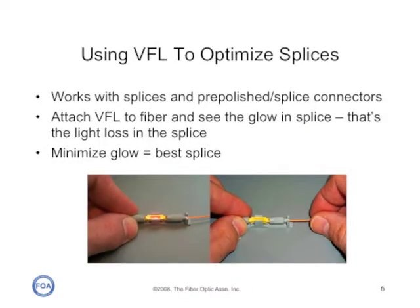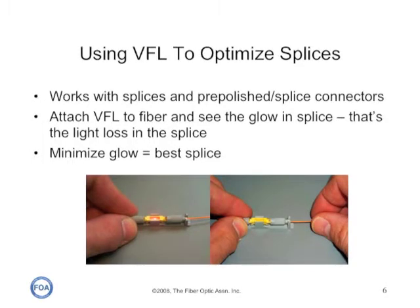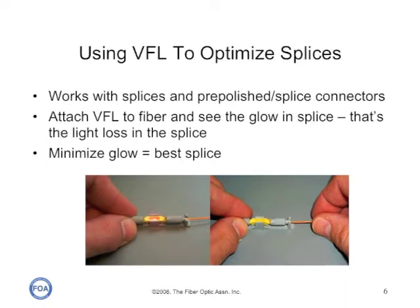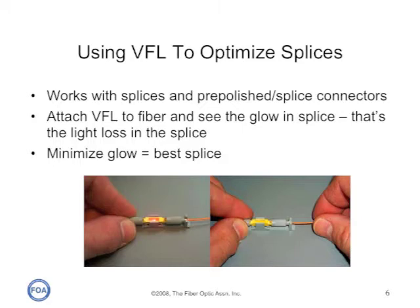Another use for a visual fault locator is to optimize mechanical splices, or to use it with pre-polished splice connectors to optimize the splice in the connector itself. You simply attach a visual fault locator to the fiber, and the light that's lost in the connection will be a bright red glow, and you can minimize that to get the lowest possible loss from the splice. It's a simple process that has been used for many years in fiber optics to great advantage.